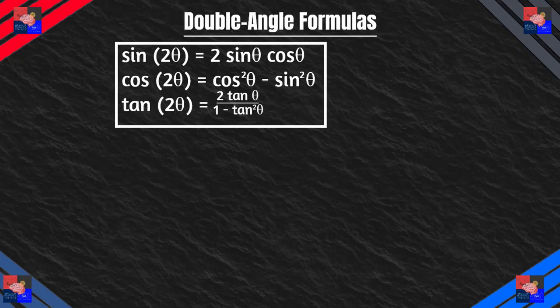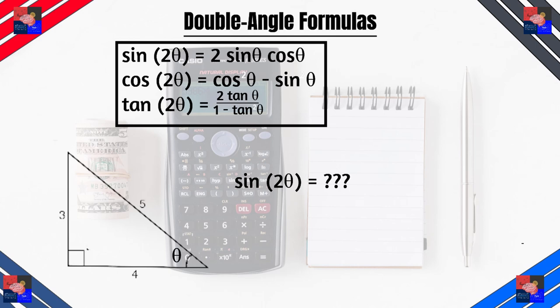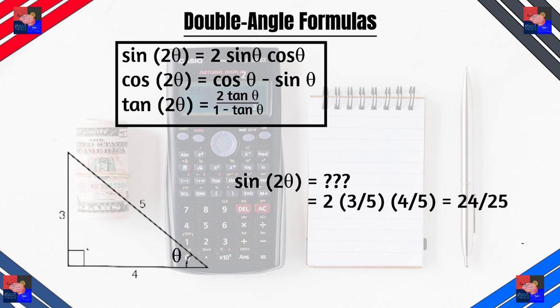We can use these to express the sum of two common angles on the unit circle. The second type is the double angle formulas. For example, say we have a 3-4-5 triangle and this angle is theta. Sine θ is 3/5 (opposite over hypotenuse) and cosine θ is 4/5. So what is sine 2θ? Using the formula: 2 × (3/5) × (4/5) = 24/25.